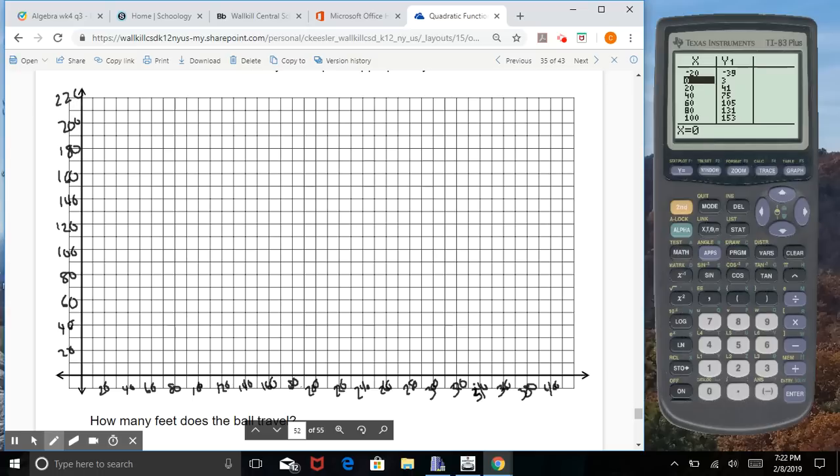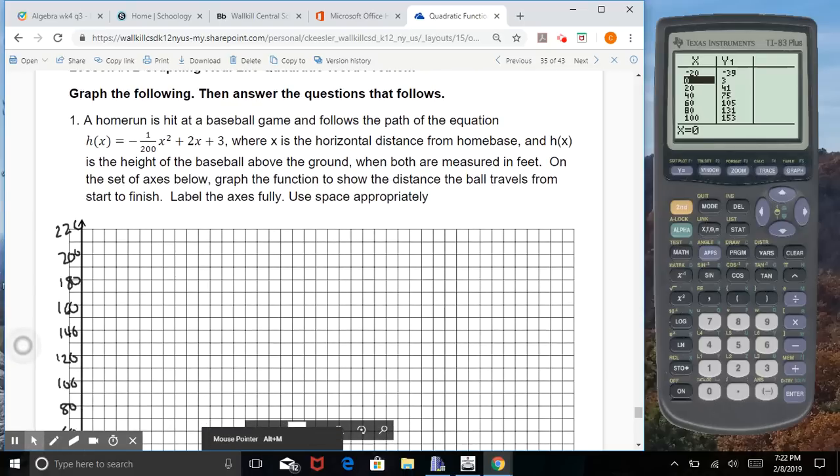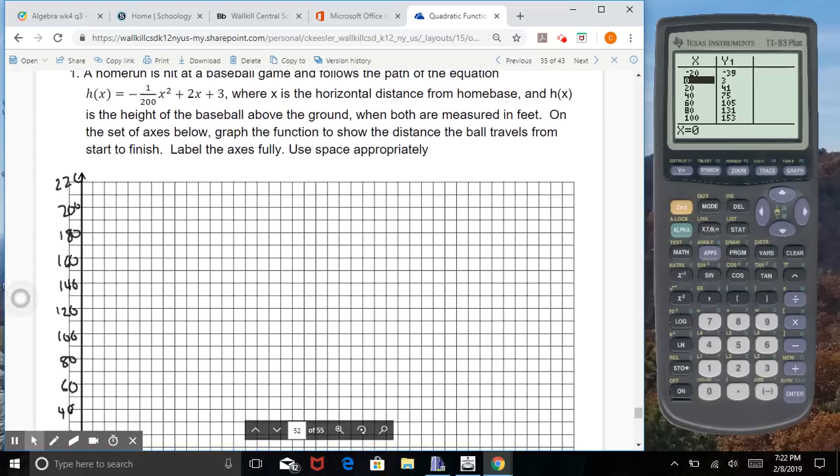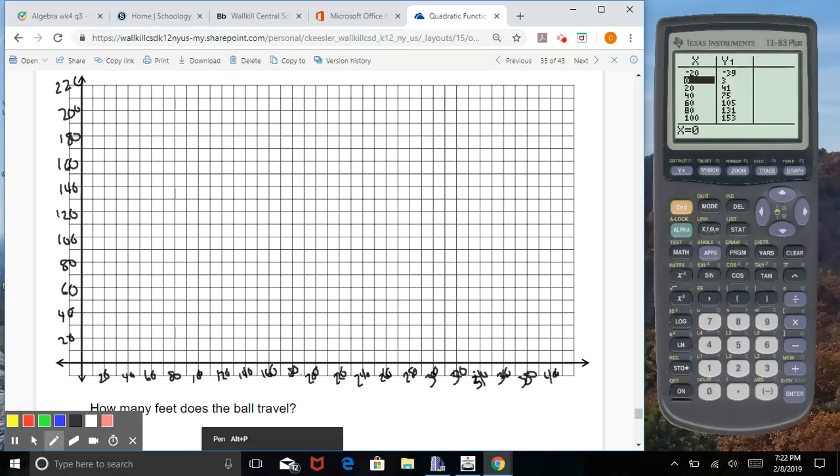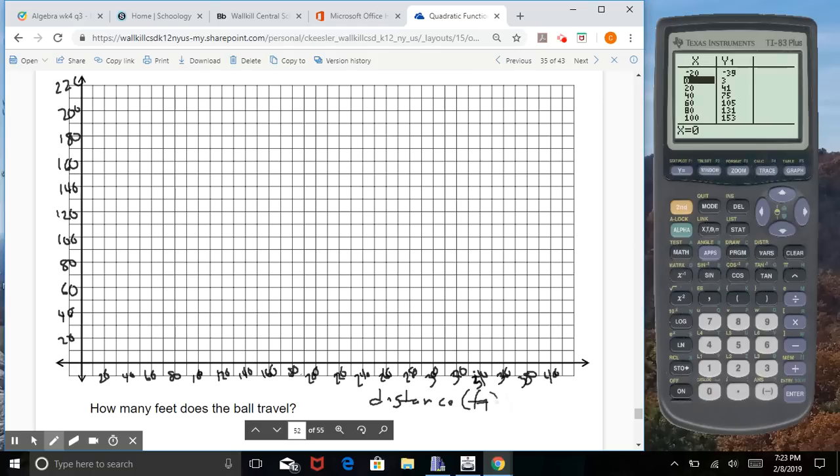And we want to make sure we label completely. And if we remember, back to the actual problem itself, it's all talking about the height above ground and the distance also measured in feet. So where x is the horizontal distance from home base and h(x) is the height. So both of these are height in feet, or distance in feet for the x, and height for the y.